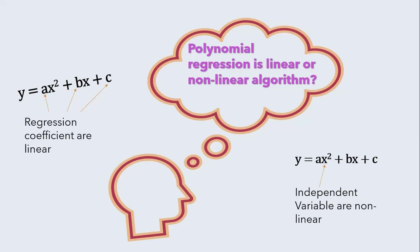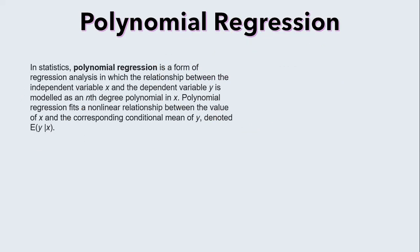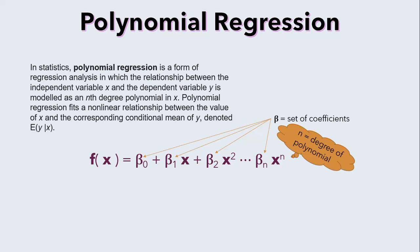X value can have degree of 2, 3 or anything. Polynomial regression is a process of finding a polynomial function that takes the form f of x equals beta 0 plus beta 1 x1 plus beta 2 x2 up to beta n xn, where n is the degree of polynomial and beta is the set of coefficients. Through polynomial regression, we try to find the nth degree polynomial function which is the closest approximation of our data points.